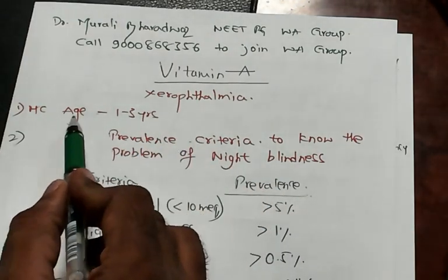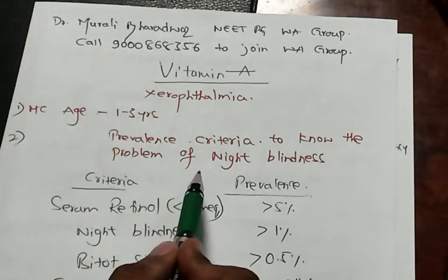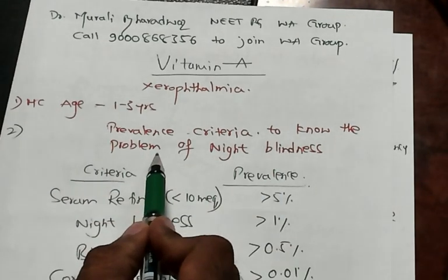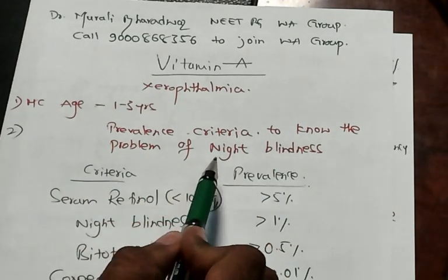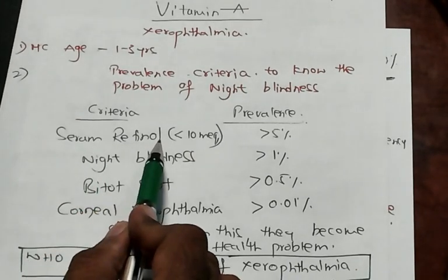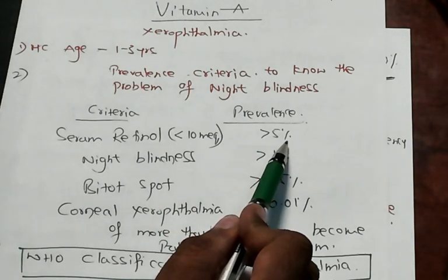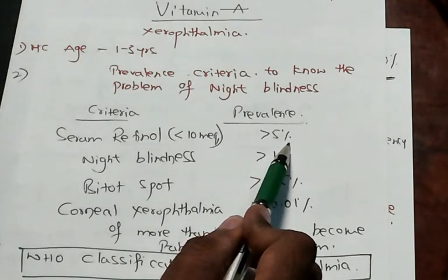What is the most common age group for xerophthalmia? One to three years. What are the prevalence criteria to know the problem of night blindness?